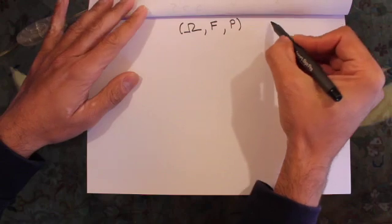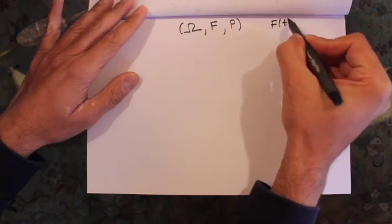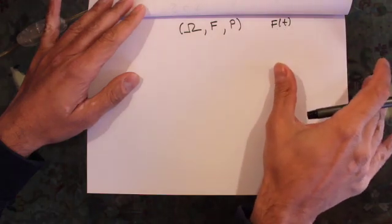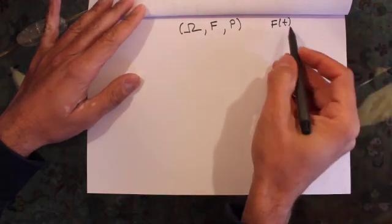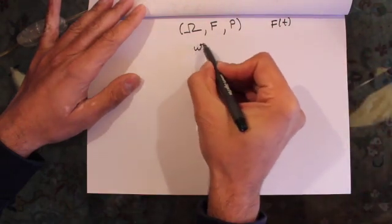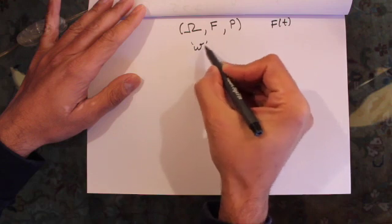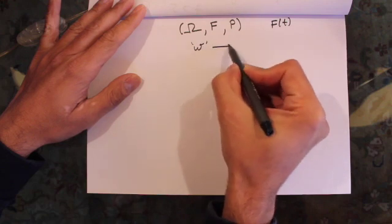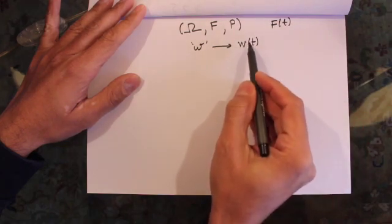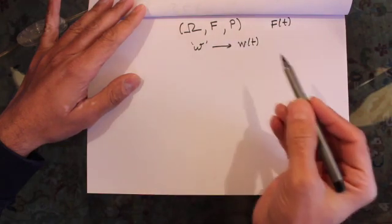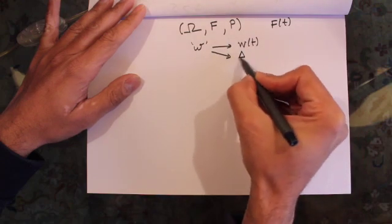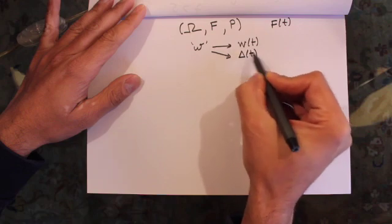We are also equipped with the filtration given by F of t, and if you remember, this filtration is used to model information into our models. Let's assume that we conduct an experiment and we get an outcome omega, and depending on the outcome omega, we'll get some path of a Brownian motion. Or in other words, Brownian motion is dependent on this omega. We will also get another adapted stochastic process given by delta of t which also depends on the outcome.